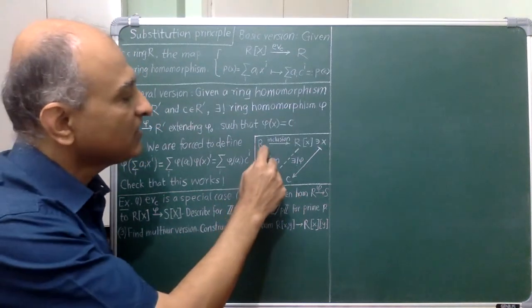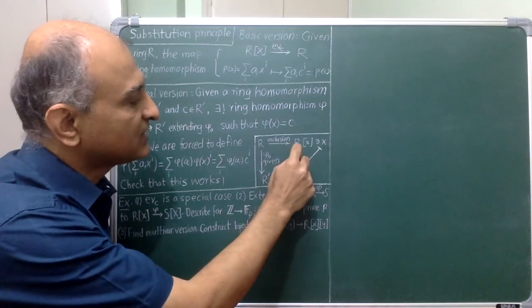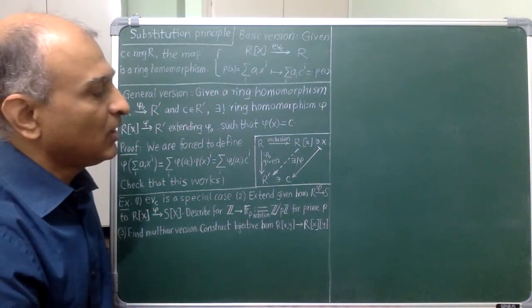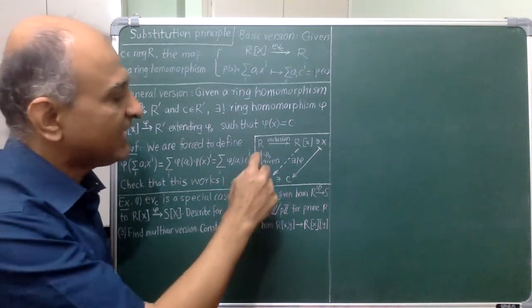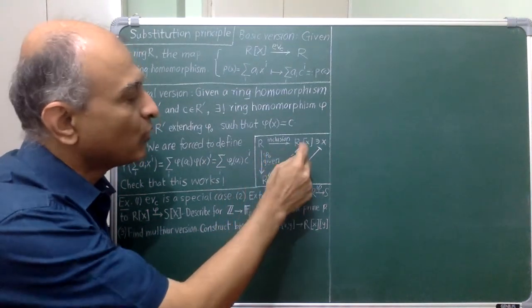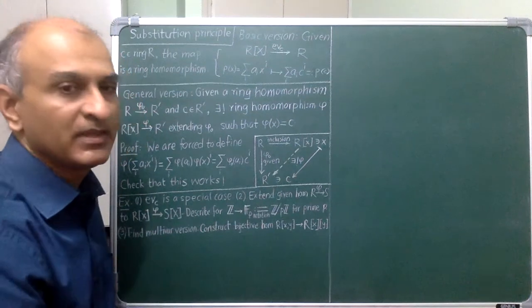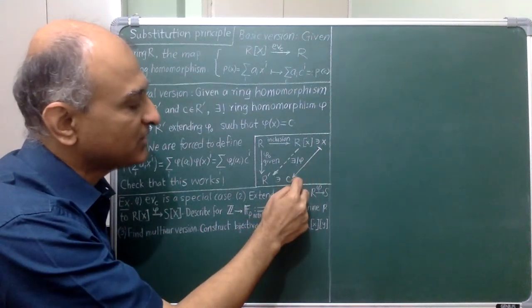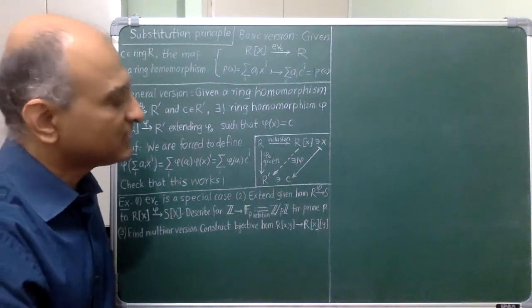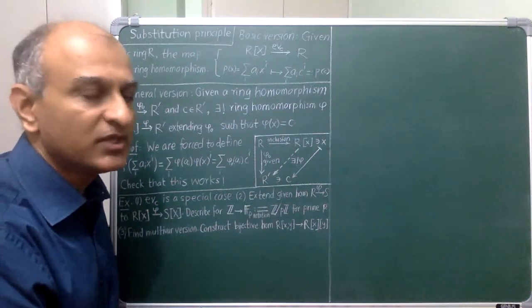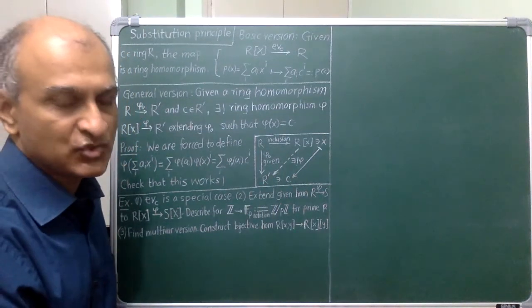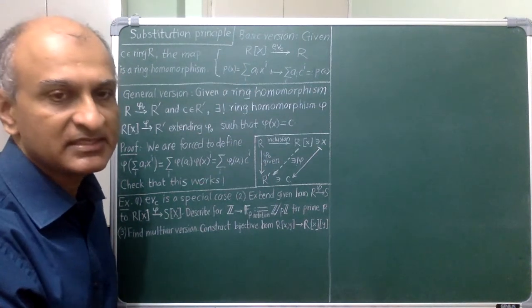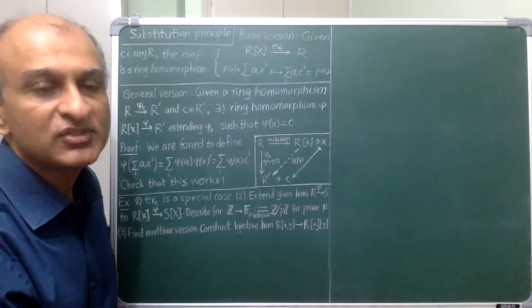Remember that R has been identified with the subring of constant polynomials in R[x]. What we want to do is extend this map phi_0 to a homomorphism from the larger ring in such a way that x should be mapped to the special element C. The assertion is that there is a unique way to do this. To prove this, we first use the asserted uniqueness as a hint and try to deduce the formula for phi.